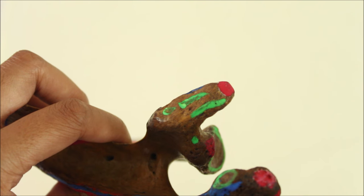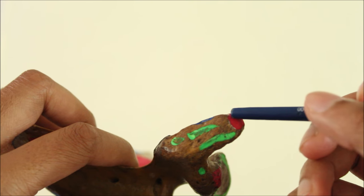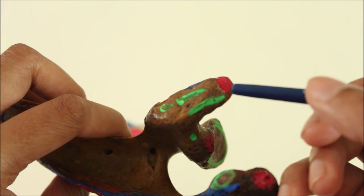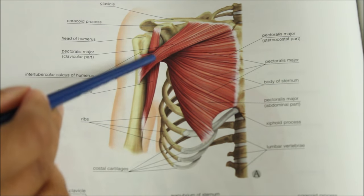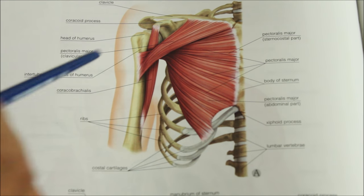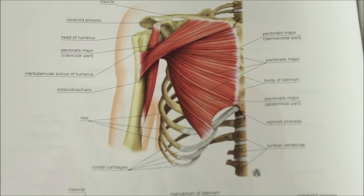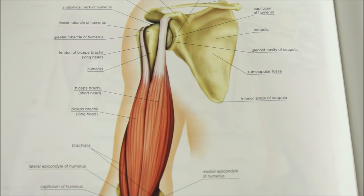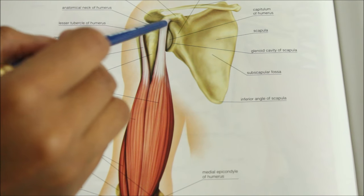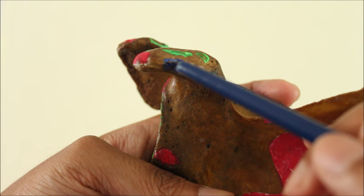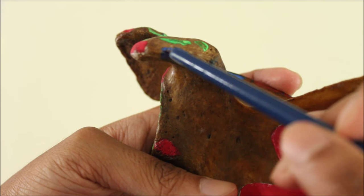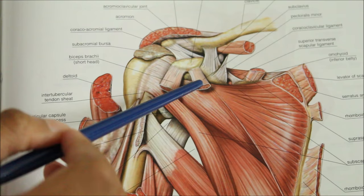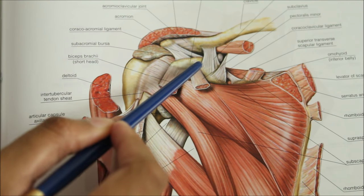The coracobrachialis originates from the medial part of the tip of the coracoid process. The short head of the biceps brachii originates from the lateral part of the tip of the coracoid process. The pectoralis minor is inserted into the medial border and superior surface of the coracoid process.